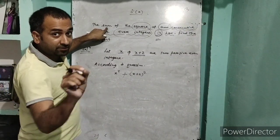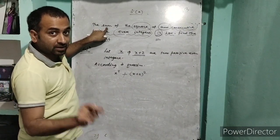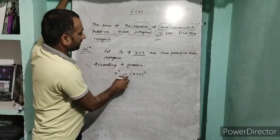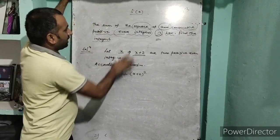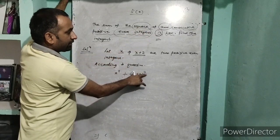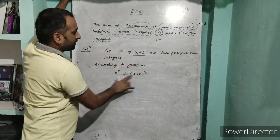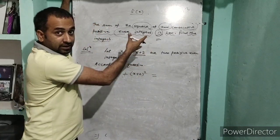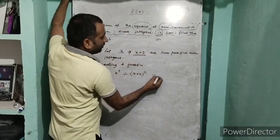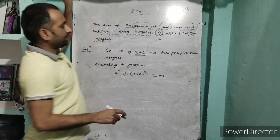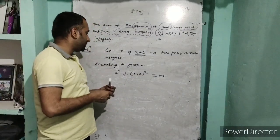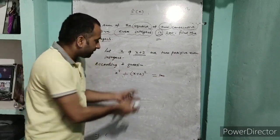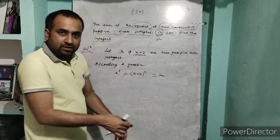Listen to every word and every sentence carefully. According to the question, the sum of the squares of the two consecutive positive even integers is equal to 100. So we write: x² + (x+2)² = 100. This is your quadratic equation. Now you will simplify it.